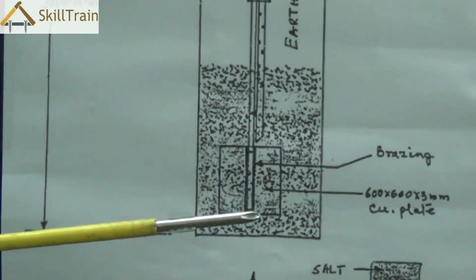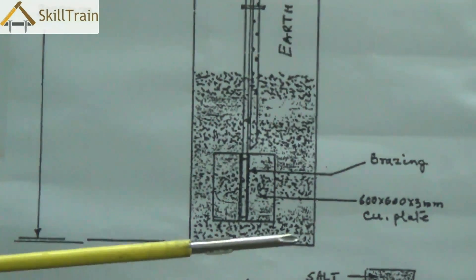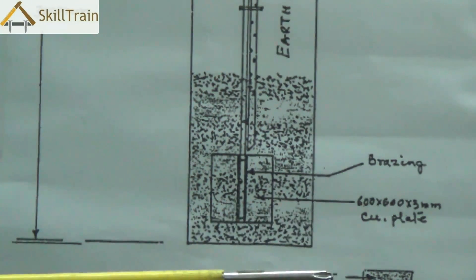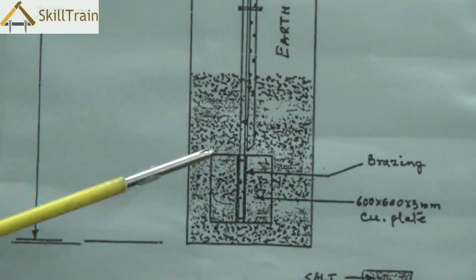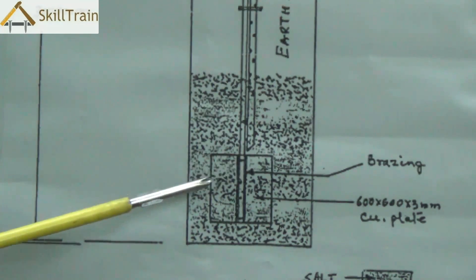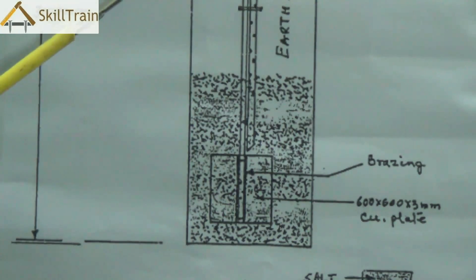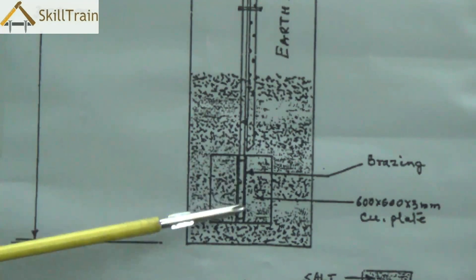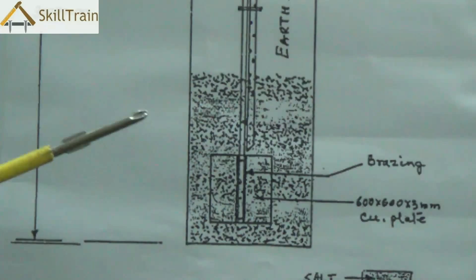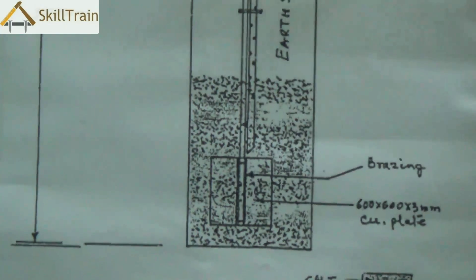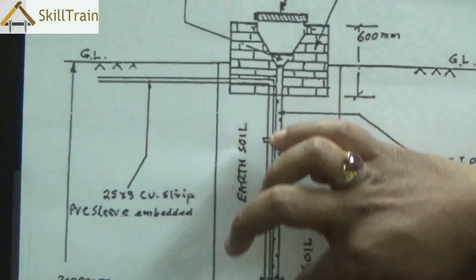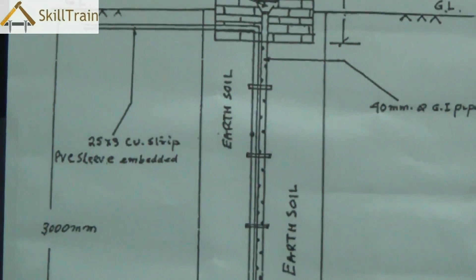So this essentially is how the plate earthing is made and how it functions here. Now there are some advantages of plate earthing obviously because it is very easy to make and can be done very easily with things available in most houses but there are some disadvantages also.